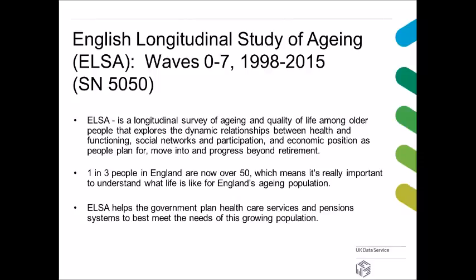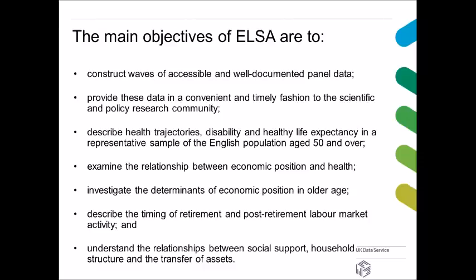Why is ELSA so interesting? One in three people in England are now over 50, making it really important to understand what life is like for England's aging population. ELSA helps the government plan for healthcare services and pension systems. The main objectives include constructing waves of accessible panel data, describing health trajectories, disability, and healthy life expectancy in a representative sample aged 50 and over, examining the relationship between economic position and health, and understanding relationships between social support, household structure, and the transfer of assets.